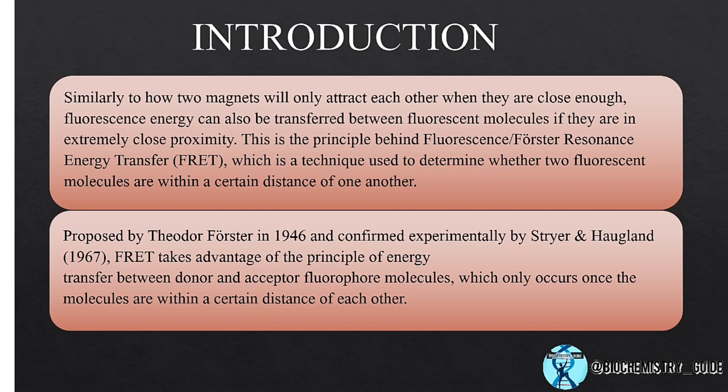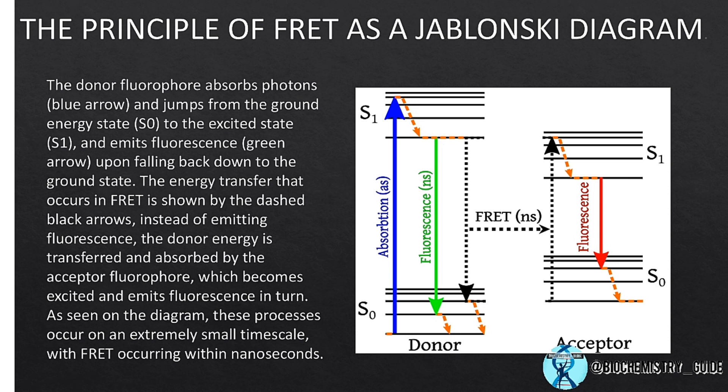Now we will understand FRET's principle using a Jablonski diagram. There are two molecules: the first is the donor and the second is the acceptor. The donor fluorophore absorbs photons and jumps from the ground state to the excited state.